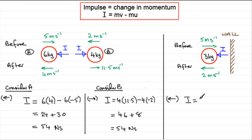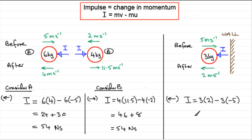So, impulse I equals the change in momentum, mv minus mu. The mass is 3 kilograms. The final velocity: speed is 2 metres per second in the positive sense, so that's plus 2. Then minus the momentum before impact: mass times initial velocity, speed of 5 metres per second in the opposite sense, so that's minus 5. Working this out: 3 times 2 is 6, minus 3 times minus 5 is plus 15, adding those gives 21 newton seconds.